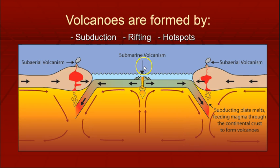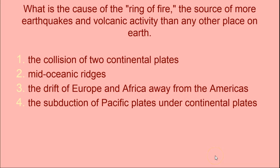Volcanoes are formed at the same subduction zones where you have earthquakes, so subduction zones have a little bit of everything — they are at the converging boundaries. What is the cause of the Ring of Fire? The answer is the subduction of Pacific plates under the continental plate, because you have both earthquakes and volcanoes, so it must be a subduction zone.